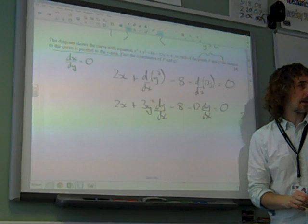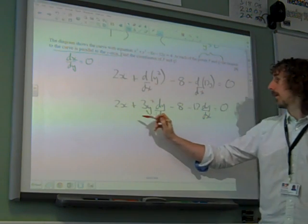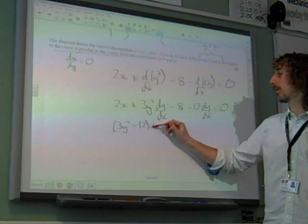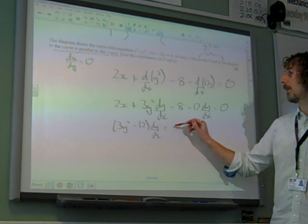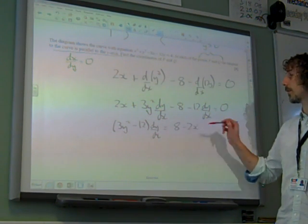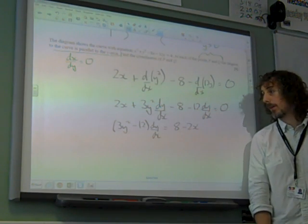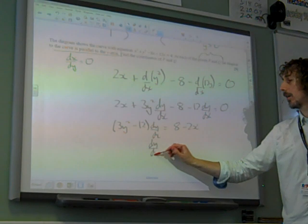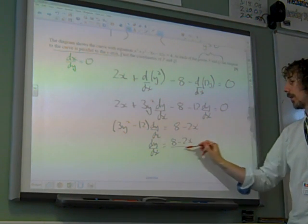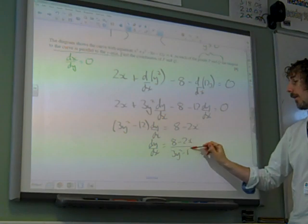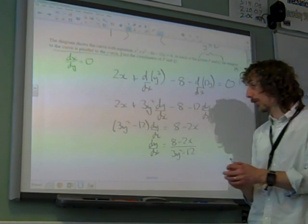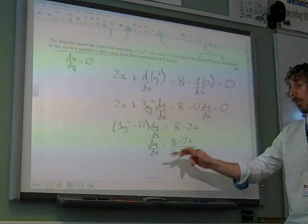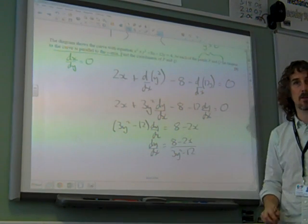We now need to collect like terms together, carefully. We've got 3y squared minus 12, lots of dy/dx. And we've got an 8 minus 2x that we're going to shove over to the other side. Which gives us dy/dx is 8 minus 2x over 3y squared minus 12. And of course, if you've done that the other way, at this point you end up with dx/dy equals the reciprocal of that.